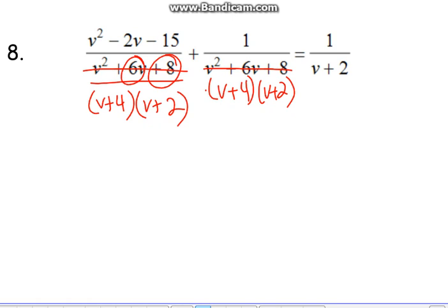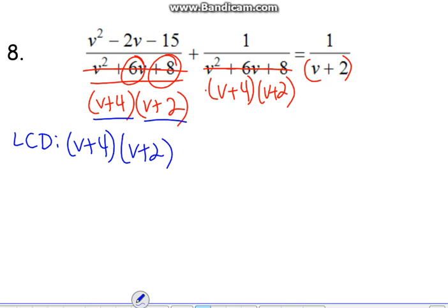Now, hopefully you're starting to recognize, why does that matter? Take a look at that last one. It has a v plus 2. Which means, can you guess what our LCD is going to be? We've got a v plus 4 piece, we've got a v plus 2 piece. The first two fractions even already have that LCD.